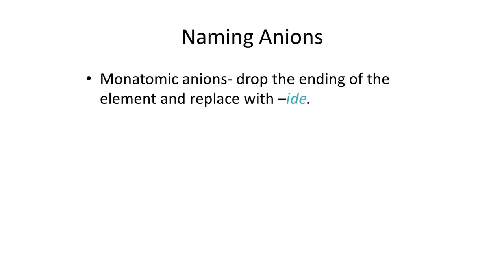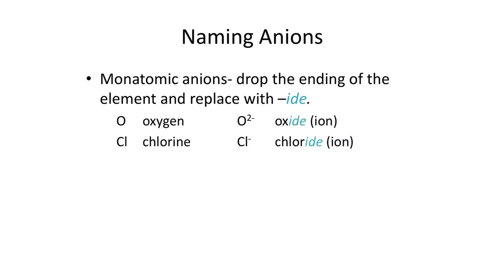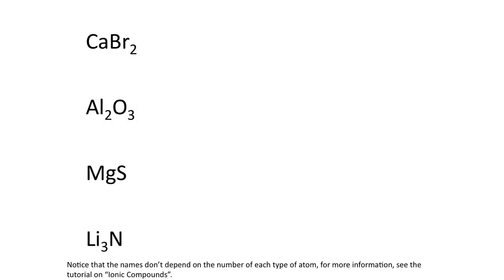Now let's talk about how to name the anions. Remember, the anions are the negatively charged ions in your compound. In order to name monatomic anions, you drop the ending of the element and replace it with -ide. So oxygen, which gains two electrons to become the oxide ion (O²⁻), we call it oxide. When chlorine gains an electron to become the chloride ion (Cl⁻), we call it chloride.